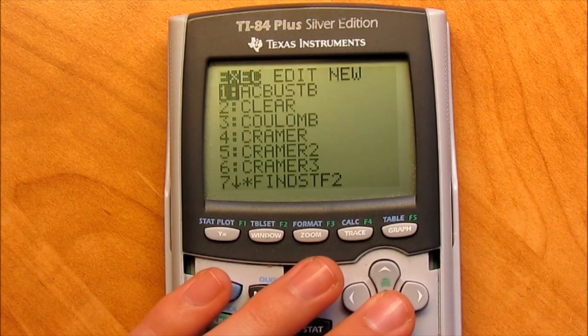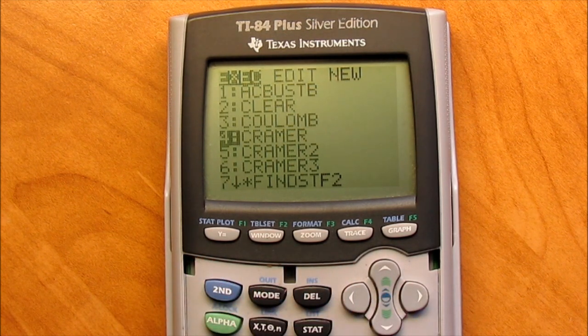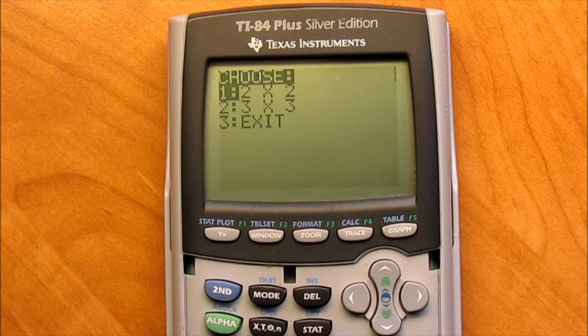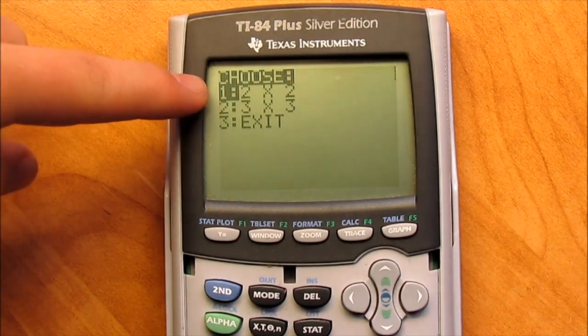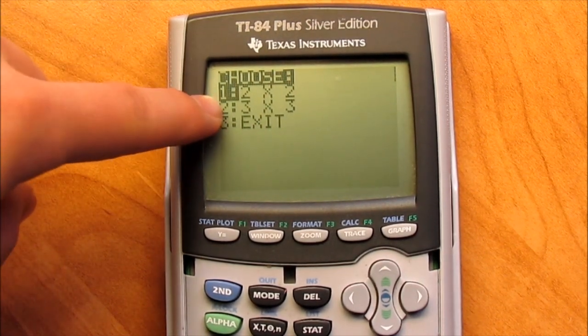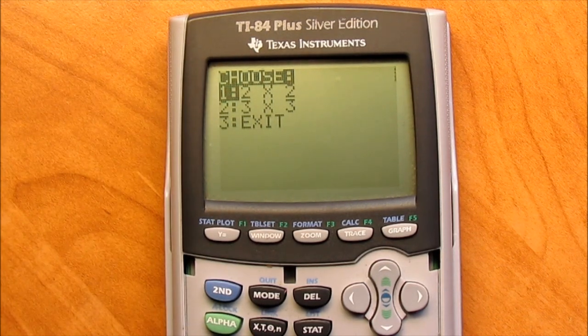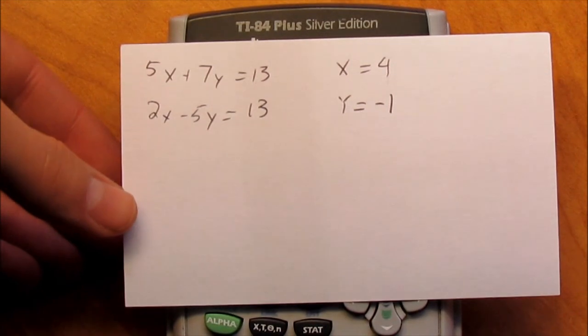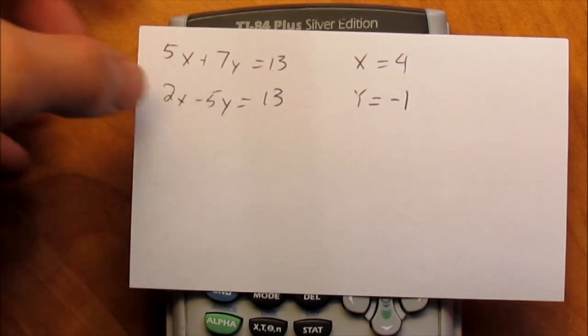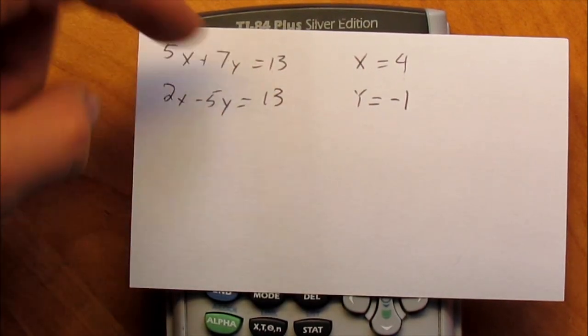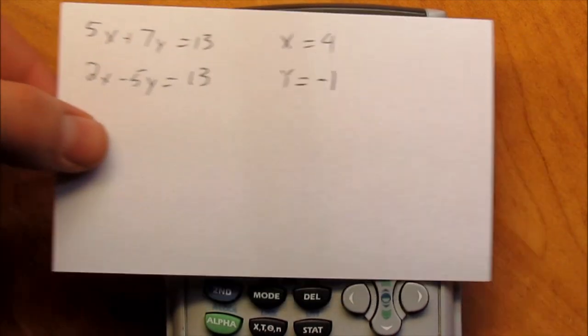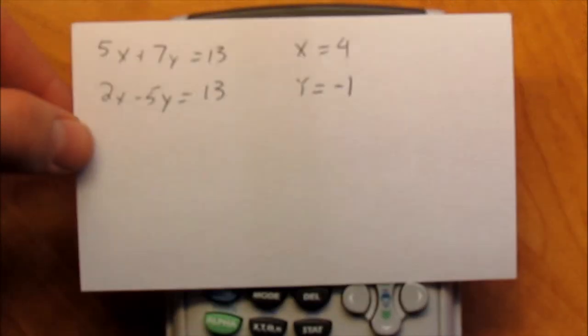So real quick I'm going to give you a preview of it here. So let's go ahead and run it. Alright, so this program allows you to choose between a 2x2 or a 3x3. So to begin, I went online and found a tutorial and this was the example the guy gave. So it's 5x plus 7y equals 13 and 2x minus 5y equals 13. And the answer is x equals 4 and y equals negative 1.